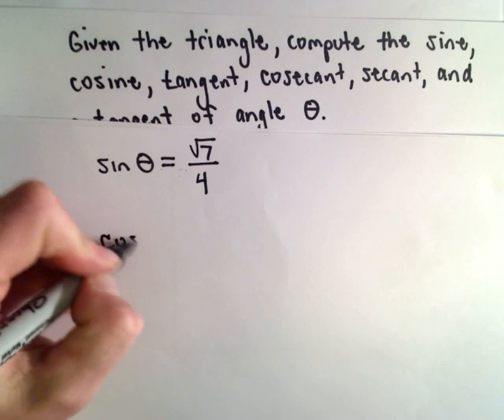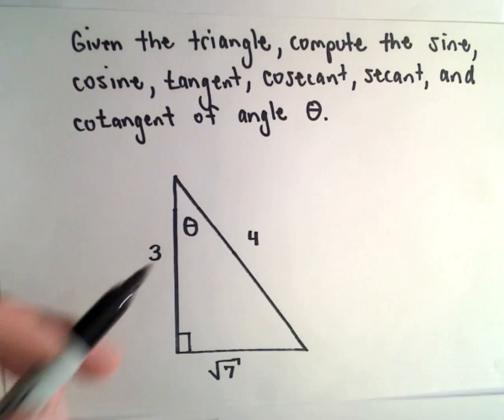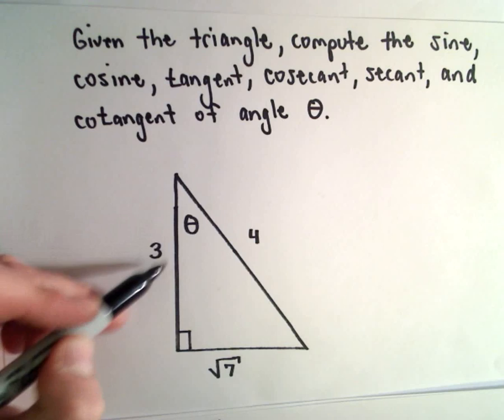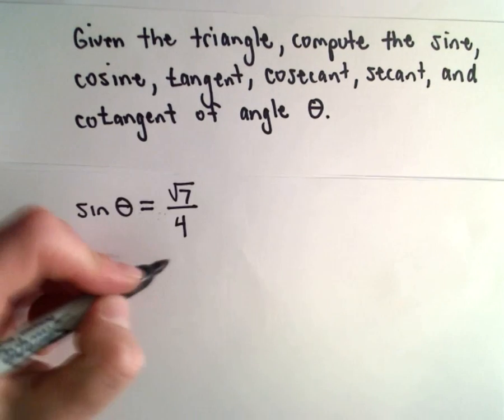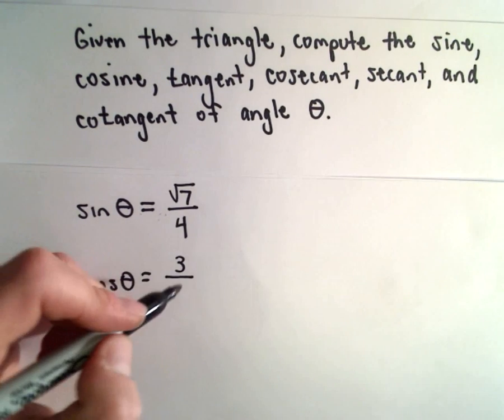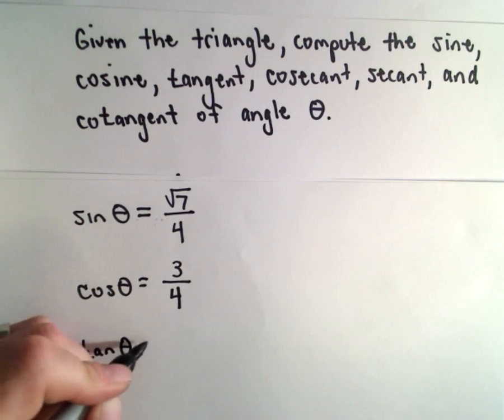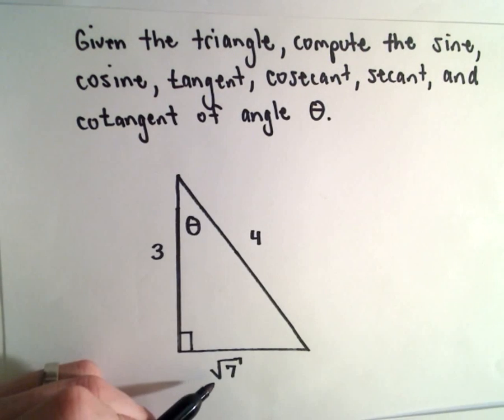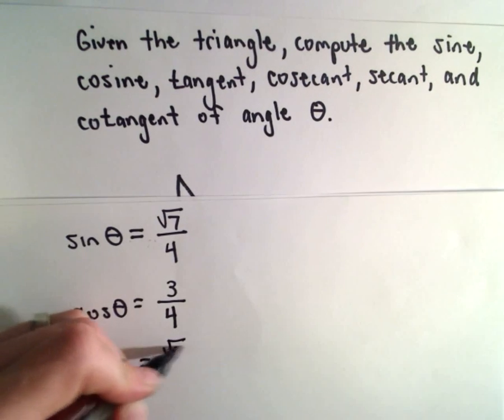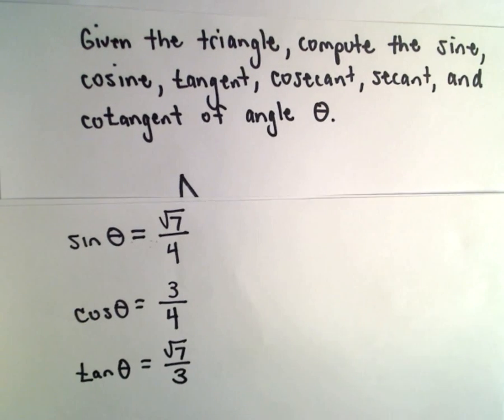Cosine of theta, well that's the adjacent side. In this case, 3 is going to be the adjacent side, divided by the hypotenuse, again which is 4. And tangent of theta, that's the opposite side, square root of 7, over the adjacent side, which is 3.